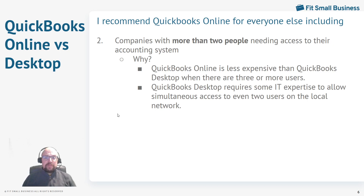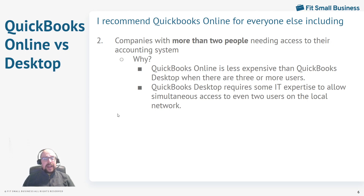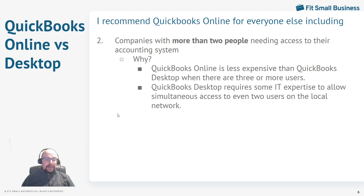The second group is companies with more than two people needing access to their accounting system. If you want multiple people logging in — perhaps one person is the general bookkeeper and another person does the billing or pays the bills — QuickBooks Online is very nice. They can easily be in the program at the same time, and QuickBooks Online Plus comes with five users included. QuickBooks Desktop, however, prices per person. Your standard license only includes one user, and additional users require additional licenses, often needing a local server setup that takes IT expertise.